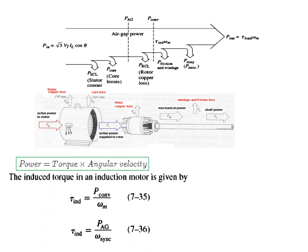Now T_induced can be calculated from two powers. One is the power converted divided by the angular speed and the other is the air gap power divided by angular speed. Power converted is on the rotor side and the air gap power is on the stator side. Since omega_m or the rotor speed changes depending on the load, it is preferable that we use this formula for calculating induced torque where omega_sync remains fixed for a particular machine.